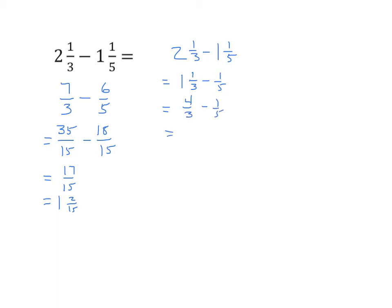We find the equivalents, and our equal units are fifteenths. Now I have 20 fifteenths minus 3 fifteenths. You can see we're working with smaller numbers now. And I get 17 fifteenths.